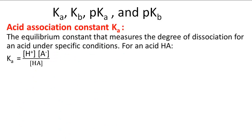Ka, Kb, pKa, and pKb. We have an acid association constant, or sometimes called the acid ionization constant, and also the dissociation constant. All of them basically describe this Ka, this equilibrium constant that measures the degree of dissociation for an acid under specific conditions.